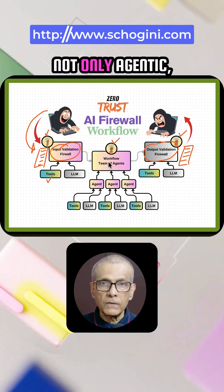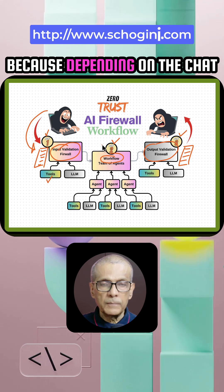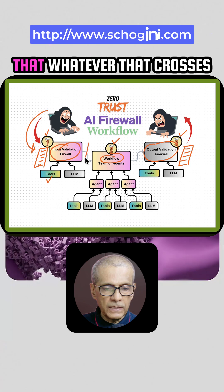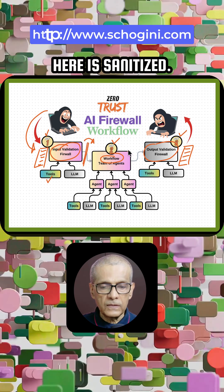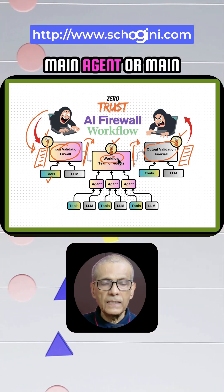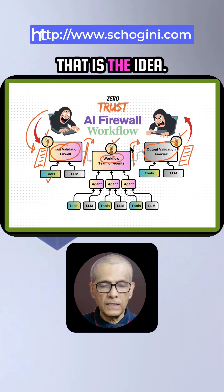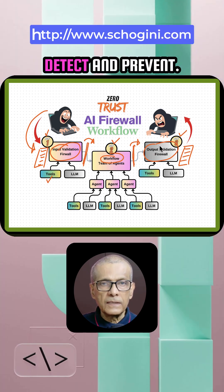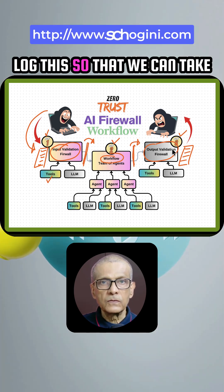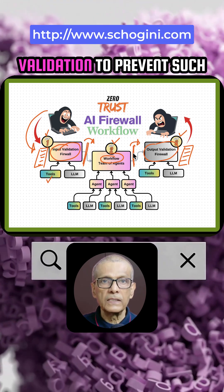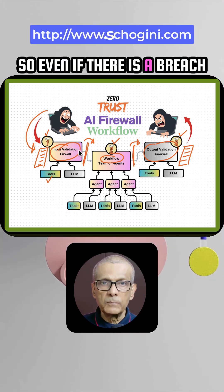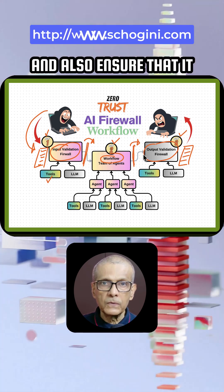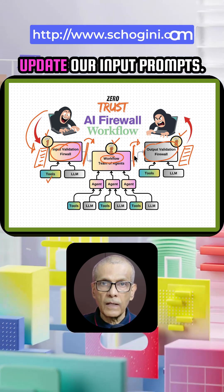Our main chatbot is not only agentic — it is a workflow-based agentic framework, because depending on the chat query that comes in, the workflow may have to route the query to different agentic frameworks. We need to ensure that whatever crosses into the system is sanitized, and whatever leaves our main agent or workflow is sanitized. Even if a prompt injection tricks the agent to reveal risky information, output validation will detect and prevent it. It can also log this so we can update input validation to prevent such attempts in the future, and alert us to correct our input prompts.